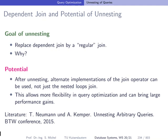Why do we do unnesting? In general, we need to help the database system perform the query more efficiently. For the dependent join specifically, this is a very costly operation — the naive evaluation uses nested loops. But if we can rewrite the dependent join as a regular join, we can apply different join implementations like hash join or sort-merge join, providing more flexibility and hopefully much better performance.